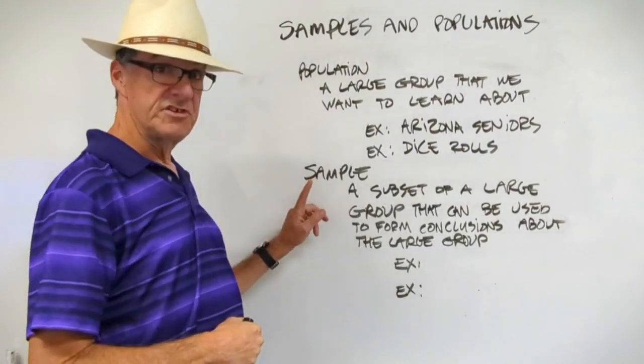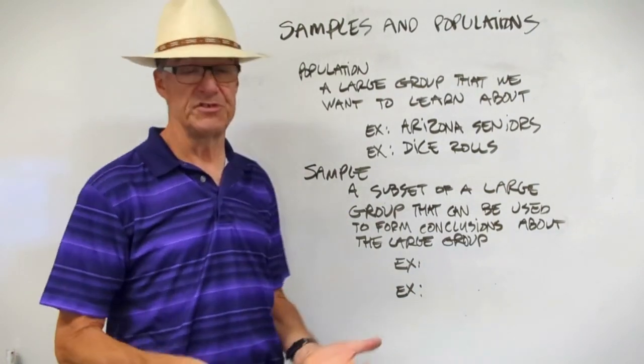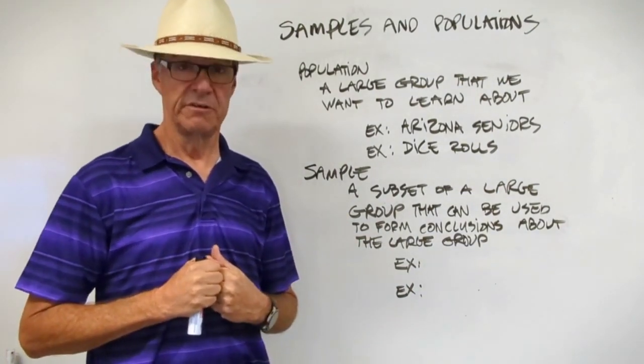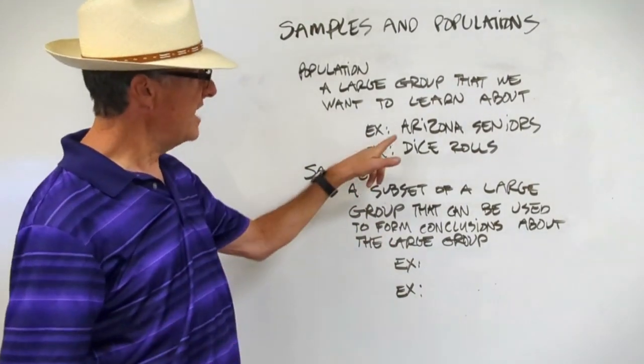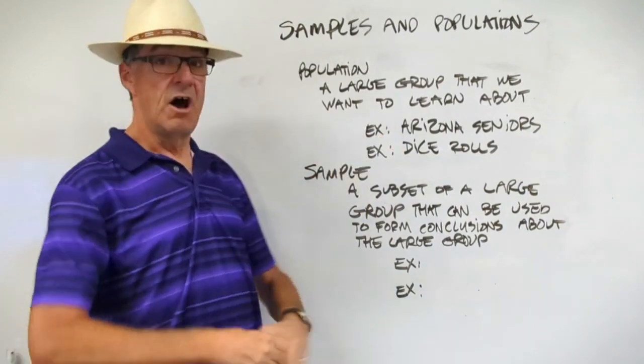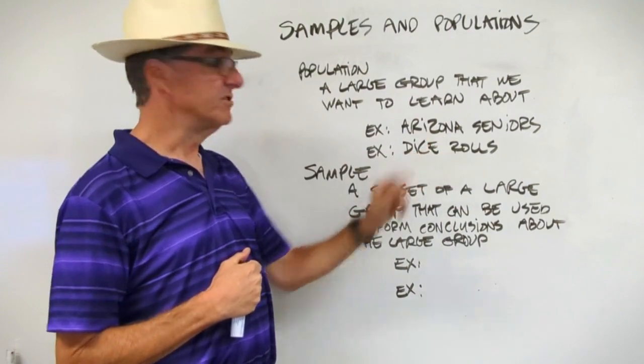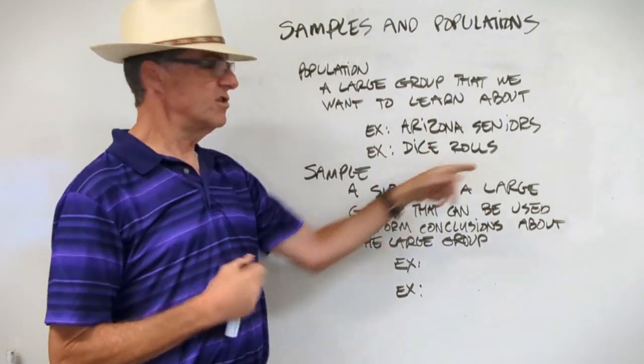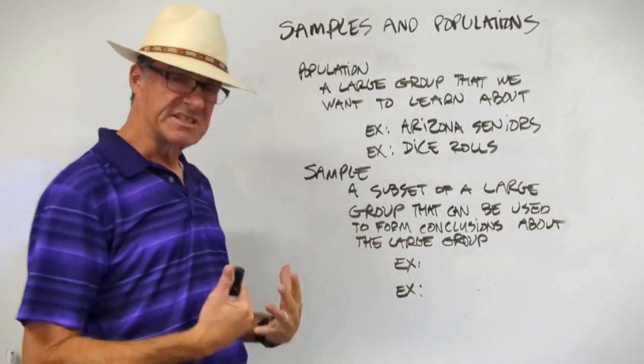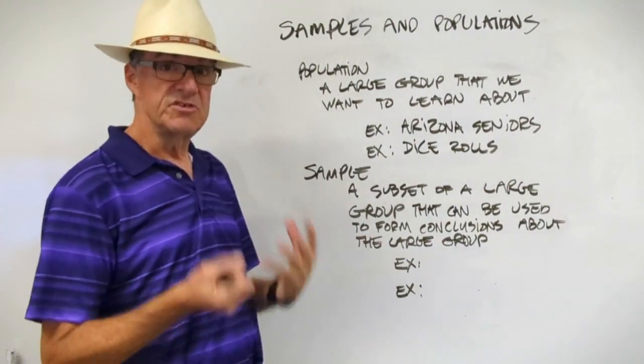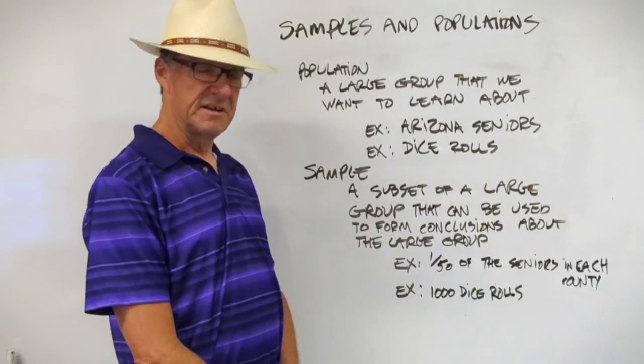So as we've mentioned, here's the definition for a sample. It's a subset of a large group that can be used to form conclusions about the large group. It's a subset of the large group. So I want you to do now is pause the video and think about that. What would be a subset of all the Arizona seniors that we could use as a sample to find out about all the Arizona seniors? And then also for dice rolls. So the large group of any dice roll on the planet, what would a subset of that be that we could use to analyze to say something about this large group? So pause the video and jot those down.